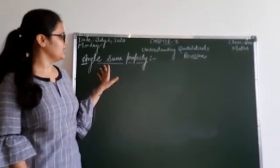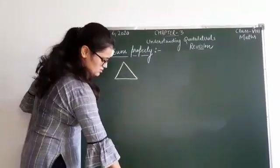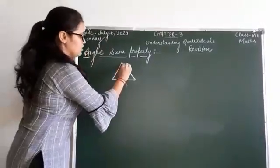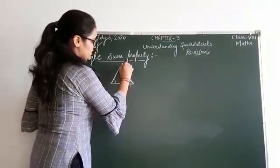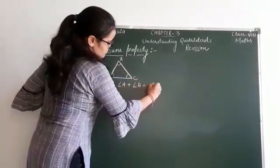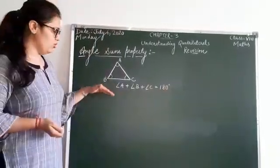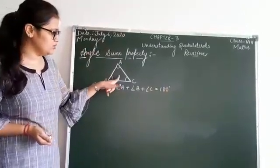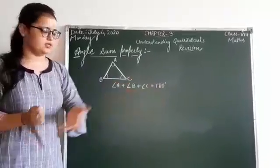The next topic is angle sum property. Till now, you have been doing angle sum property in triangles only. When you apply angle sum property in a triangle, the sum of its interior angles equals 180 degrees — angle A plus angle B plus angle C equals 180 degrees. But what about polygons which have more number of sides? If a polygon has 3 sides, the angle sum is 180 degrees.